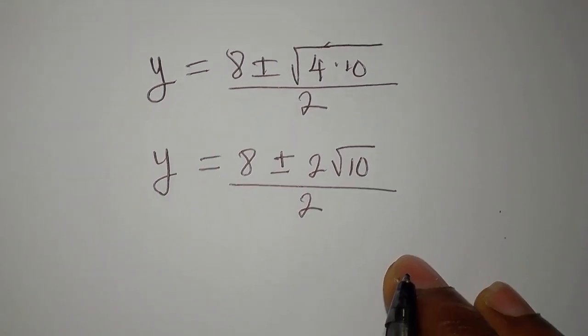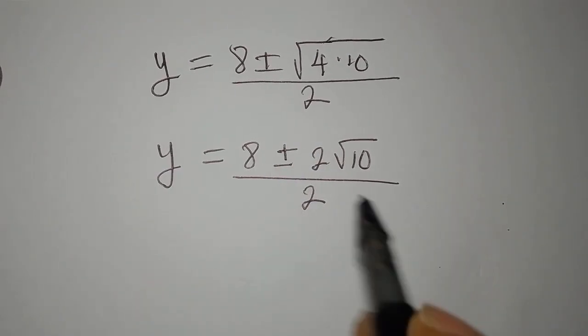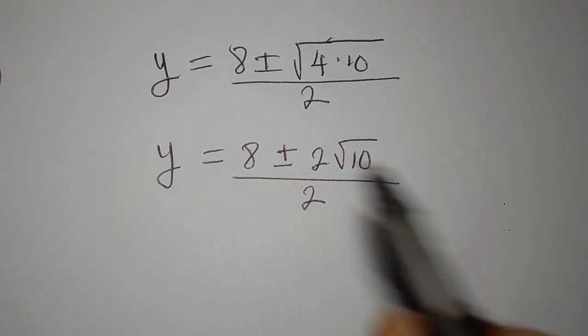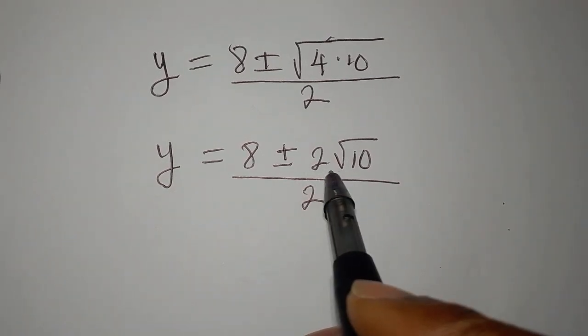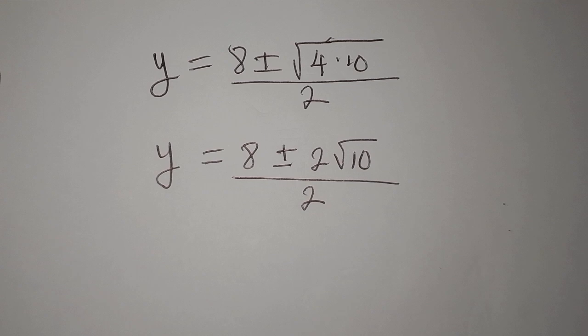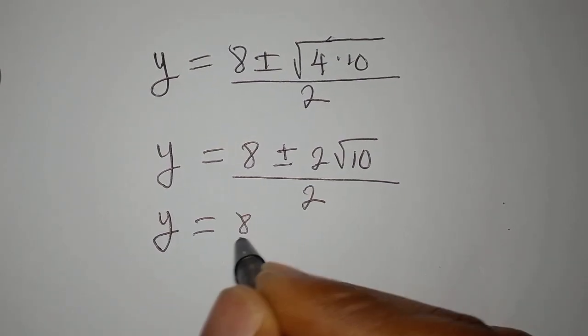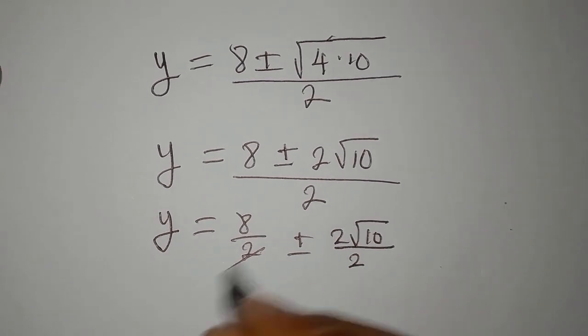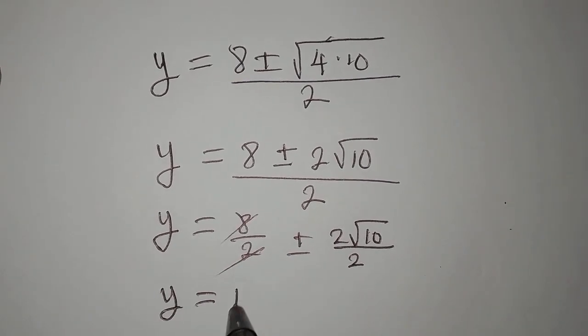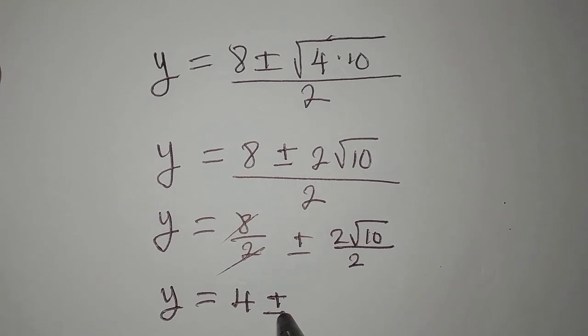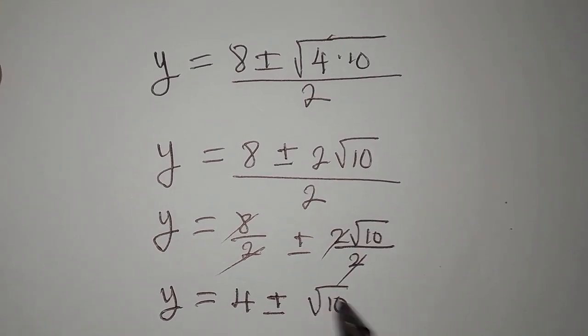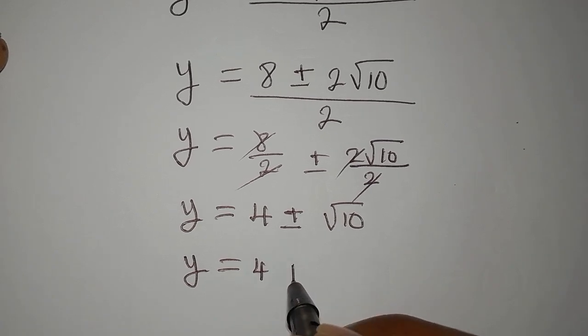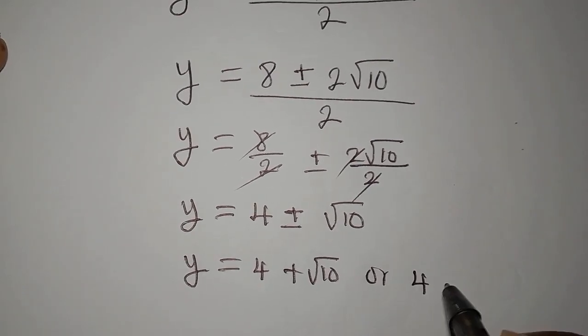Okay, so y now is equal to 8 plus or minus square root of 4 is 2. Then we have root 10. This is divided by 2. So, that if we proceed now, we don't add this or subtract because this root, this 2 is attached to the root 10. So, you can't separate. Okay, the only thing you can do is to divide both sides or divide by 2 to remove that. Just like we are going to do now. So, our y now is 8 over 2 plus or minus 2 root 10 over 2. This will go here. So, y is equal to 4 plus or minus. This will go there. So, we have root 10. So, to go ahead now, we will break this into two to say that y is equal to 4 plus root 10 or 4 minus root 10.